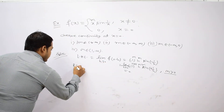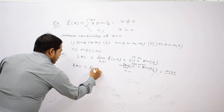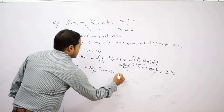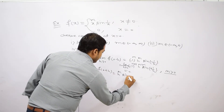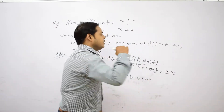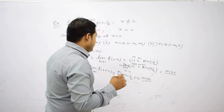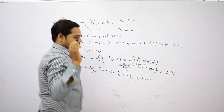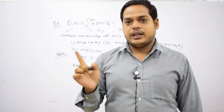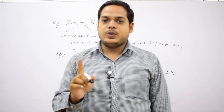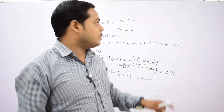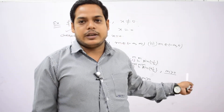Similarly, RHL = limit as h→0 of h^m · sin(1/h), which equals 0 when m > 0. So the condition for the continuity of this function at x = 0 is that m must be greater than 0. You can choose any real number m > 0; in all those situations the function is continuous.